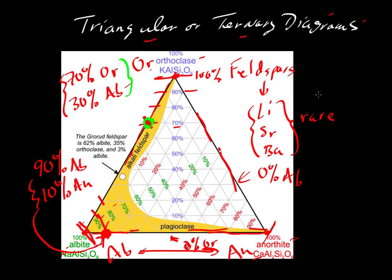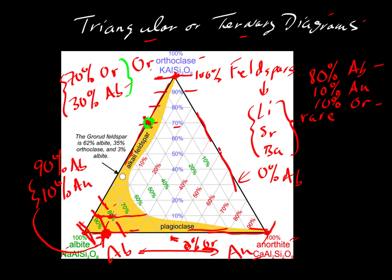Let's have something with all three components: eighty percent albite, ten percent anorthite, and ten percent orthoclase. We look for the eighty percent albite contour — that would be this one here — then the ten percent orthoclase contour, which is this one here. Those two intersect at a point. As a double check, the ten percent anorthite line should also pass through that same point, and indeed it does. So this mineral plots right there.